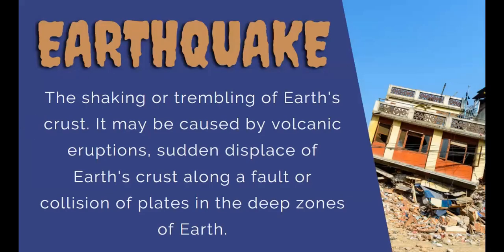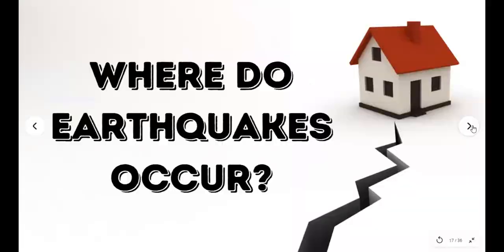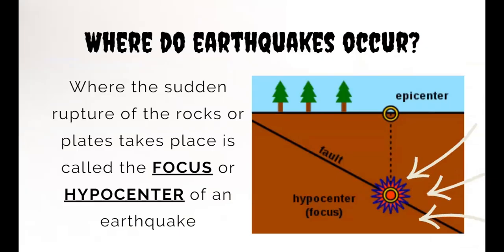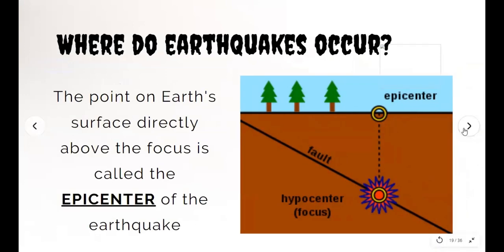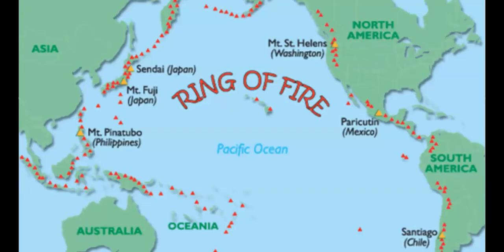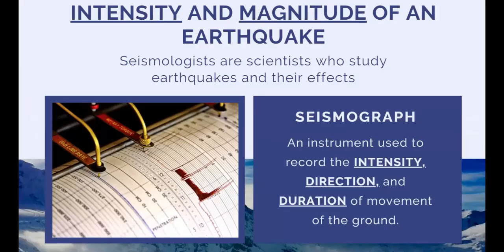What is an earthquake? An earthquake is the shaking or trembling of the Earth's crust. It may be caused by volcanic eruptions, sudden displacement of the Earth's crust along a fault, or collision of plates in deep zones of the Earth. Where the sudden rupture of rocks or plates takes place is called the focus or hypocenter. The point on the Earth's surface directly above the focus is called the epicenter. About 90% of the world's earthquakes and 80% of the world's largest earthquakes occur along the Ring of Fire.